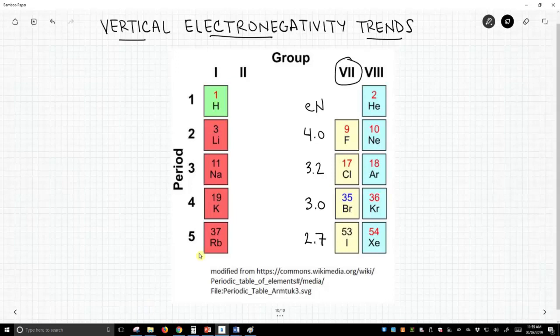These are the halogens, and if you notice on the screen, the electronegativity for these elements - fluorine is 4.0, and as we move down the periodic table, electronegativity decreases. So we go from 4.0 to 3.2 for chlorine, 3.0 for bromine, and 2.7 for iodine.